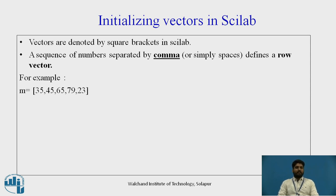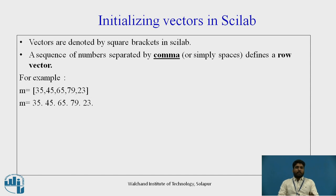For example, here M is a variable and there are 5 elements in the square bracket: 35, 45, 65, 79, 23, which represents a row vector. You can also use a space between the elements instead of a comma.